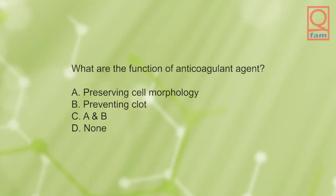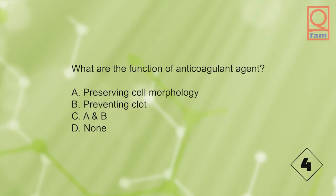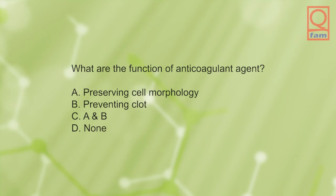What are the functions of anticoagulant agent? A) preserving cell morphology, B) preventing clot, C) A and B, D) none. The answer is C, A and B.